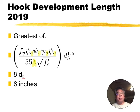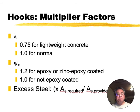Let's go through these multiplier factors. This is the same lambda - if you have lightweight concrete, it has a lower tensile strength, so you reduce that by 0.75 in front of the square root of f'c. And again, PSI for square root of f'c.